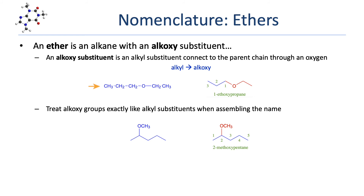In this first ether example, we have an oxygen with a propyl group on one side and an ethyl group on the other. We're going to learn the IUPAC systematic way of naming these. The first step is to find the parent chain — the longer carbon chain, which is the 3-carbon chain on the left. So this is a substituted propane. We number the carbons starting from the end closer to a substituent. The substituent here is the ethoxy group — the ethyl group bonded back to the parent chain through oxygen. The ethoxy group is on carbon 1, so we number one, two, three going right to left. That gives us 1-ethoxypropane.